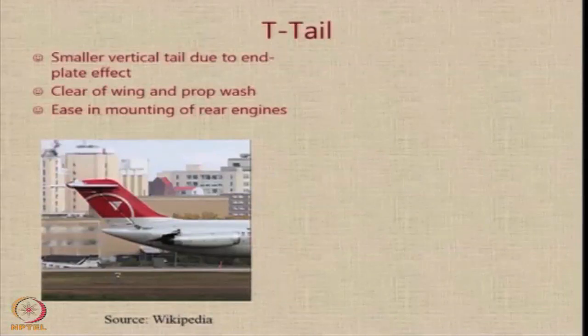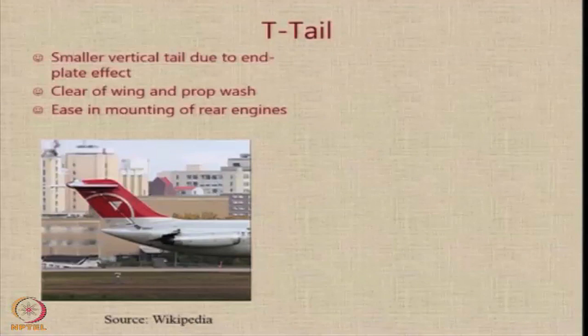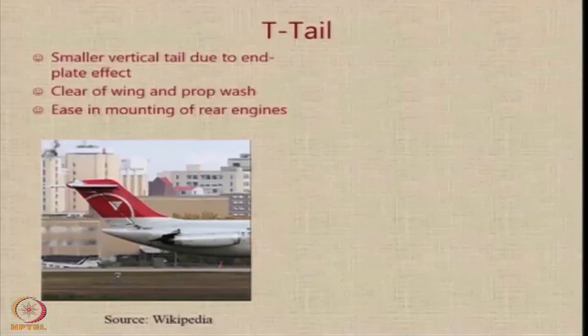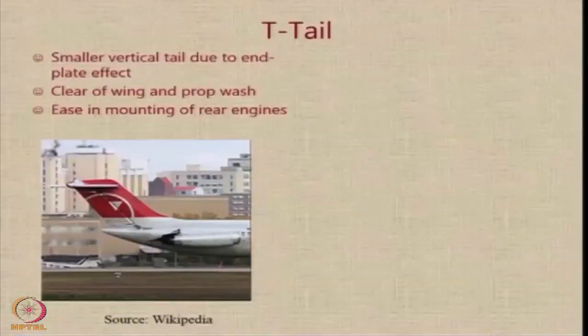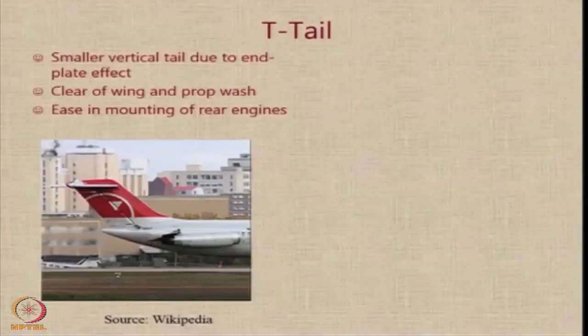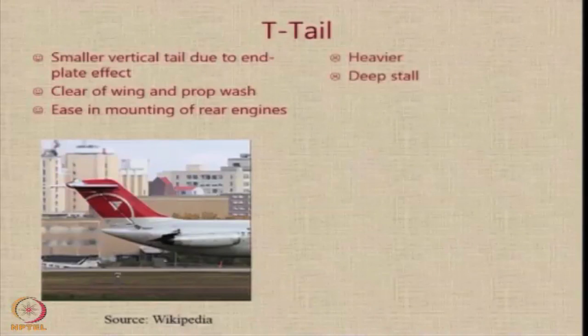Such a T-tail configuration is normally provided because you want to mount engines on the tail. Mounting the engine on the tail, the T-tail allows you to do so without necessarily creating hot spots on the horizontal tail. But there are problems. The T-tail is heavier, and structurally it is not as efficient as a conventional tail.